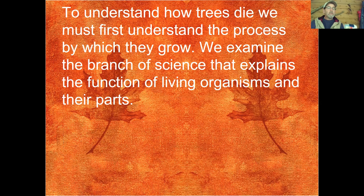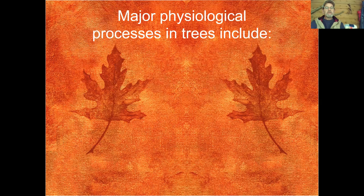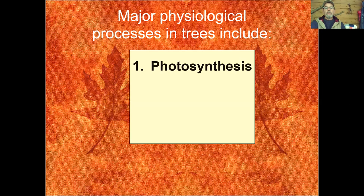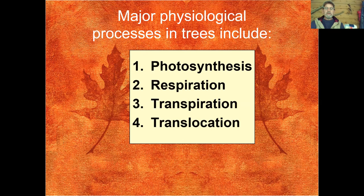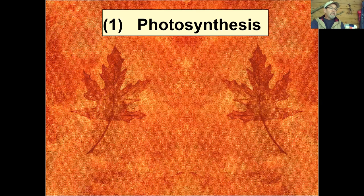To understand how trees die we must first understand the process by which they grow. We examine the branch of science that explains the function of living organisms and their parts — that's known as physiology. The major physiological processes in a tree include the following, and they all have four or five syllables: photosynthesis, respiration, transpiration, and translocation. We're going to address each of these four processes today. We begin with photosynthesis.